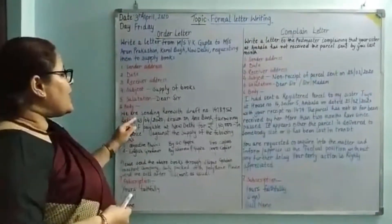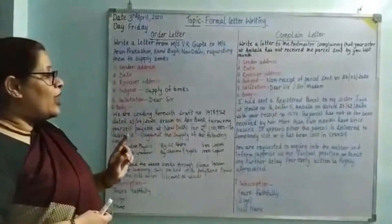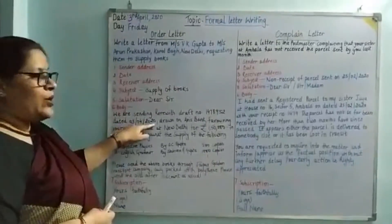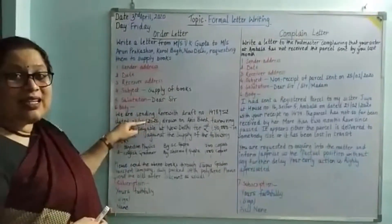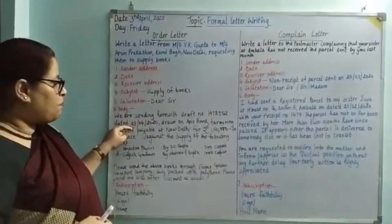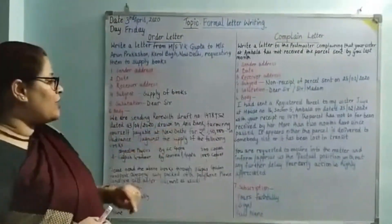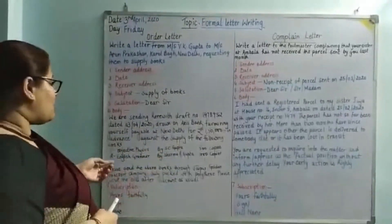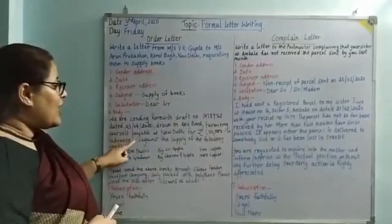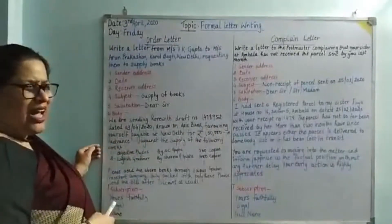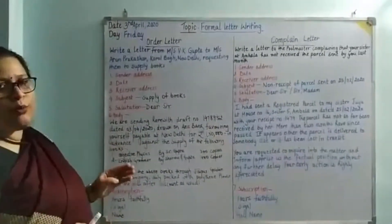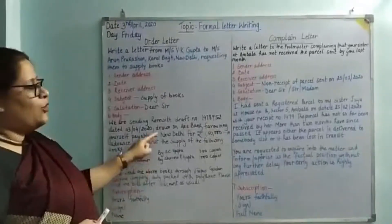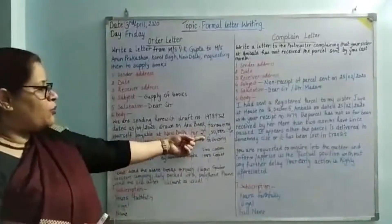In the body: 'We are sending herewith draft number 1478952 dated 3rd April 2020.' This is the way we write dates on cheques and drafts. It is drawn on Excess Bank, favoring yourself, payable at New Delhi, for rupees one lakh fifty thousand, in advance against the supply of the following books. I have given two; you may add as many as you want, provided you know who has written those books. You must mention the copies, which should sum up to one lakh fifty thousand rupees.